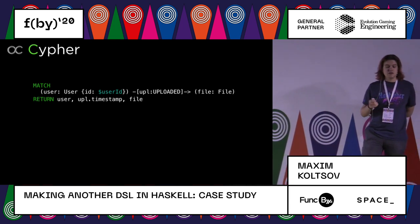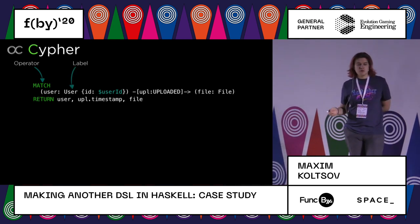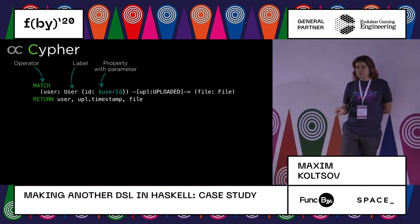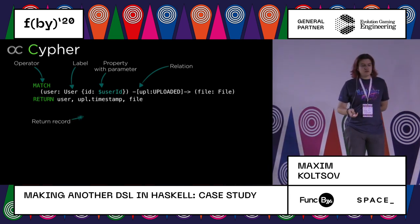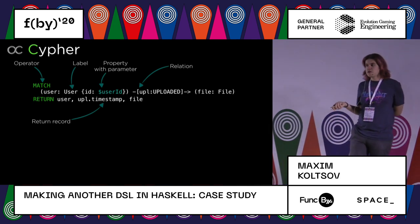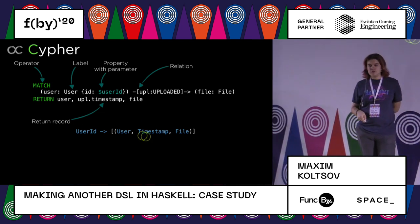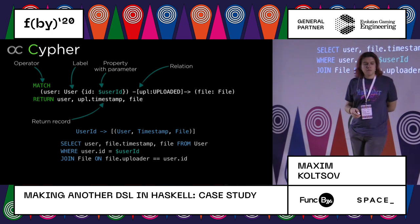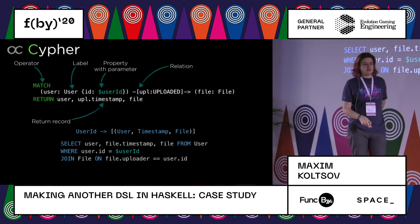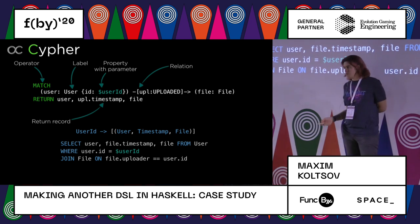Here is an example of a Cypher query. It has operators like MATCH, which roughly corresponds to SELECT in SQL. You have patterns for nodes with labels, named parameters just like SQL, patterns for relations, and you can combine nodes and relations to form paths. You also specify what your query returns. You may think of this query as a function that takes a user ID and returns a list of tuples containing a user, a timestamp, and a file object. This query roughly corresponds to a SQL statement, but sometimes it's easier to model your data with Neo4j.